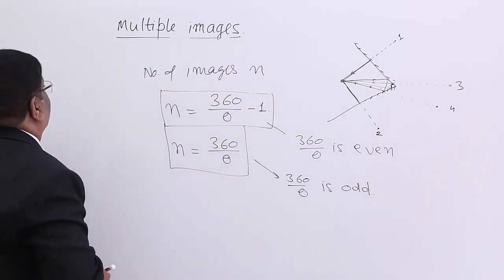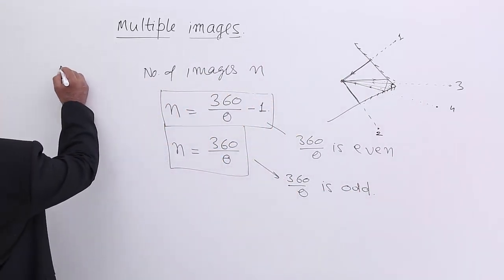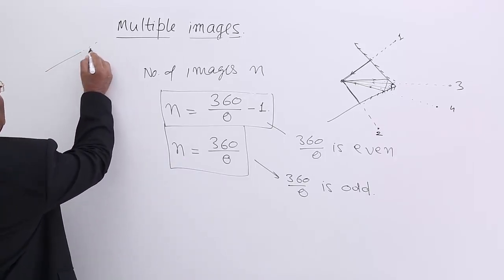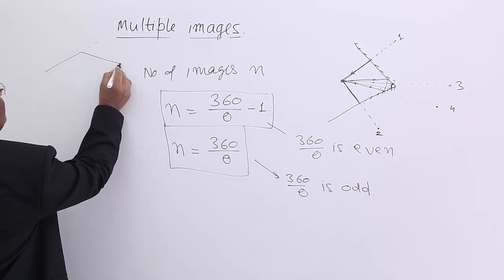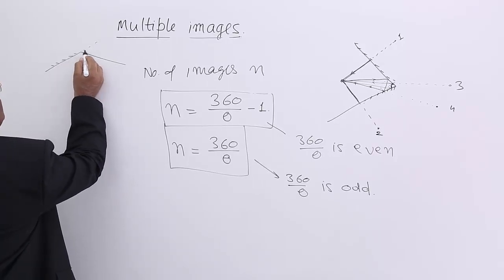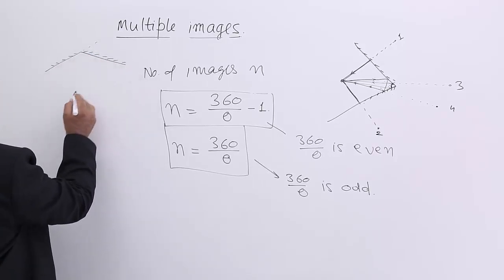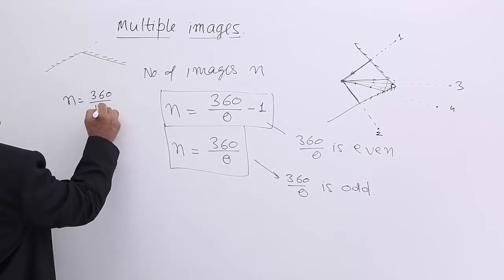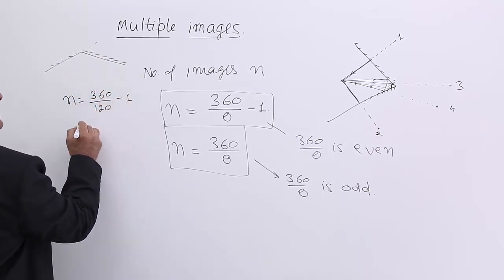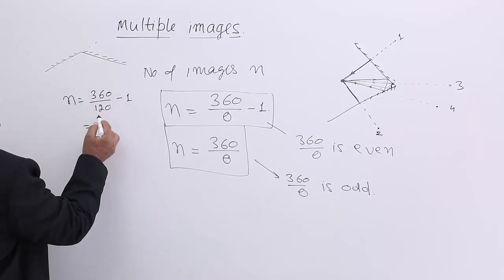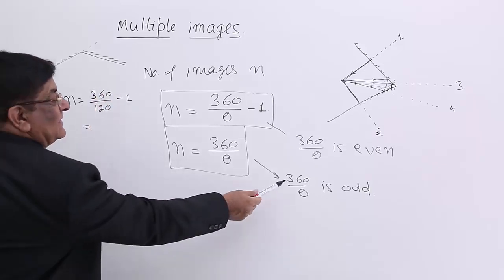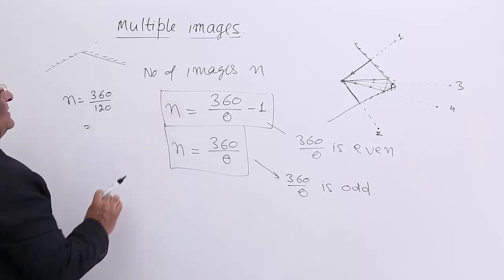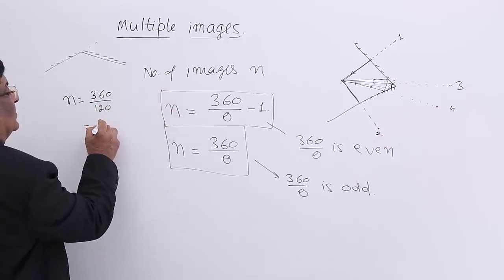Now let us test it. If there are two mirrors making an angle of 120 degrees, then the number will be equal to 360/120 - 1. So 360/120 is 3, that is odd. If it is odd, then we have to take only this formula, and three images.